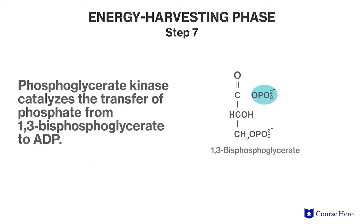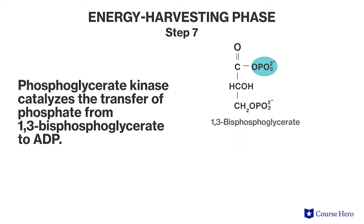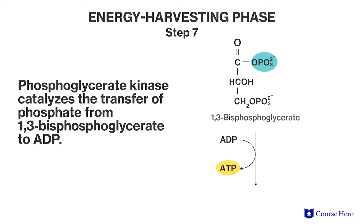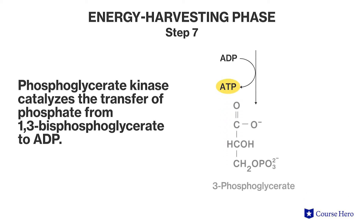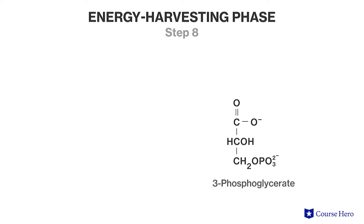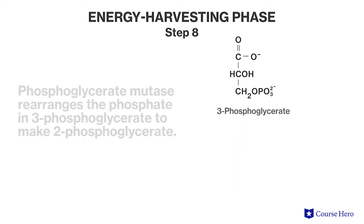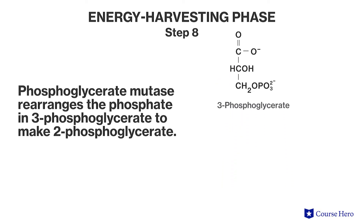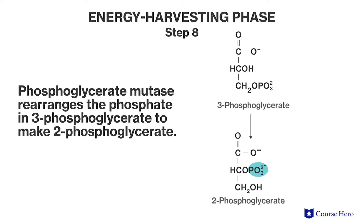Step seven: phosphoglycerate kinase catalyzes the transfer of a phosphate from 1,3-bisphosphoglycerate to ADP. This phosphorylation reaction results in ATP and 3-phosphoglycerate. Step eight: phosphoglycerate mutase rearranges the phosphate in 3-phosphoglycerate to make 2-phosphoglycerate.